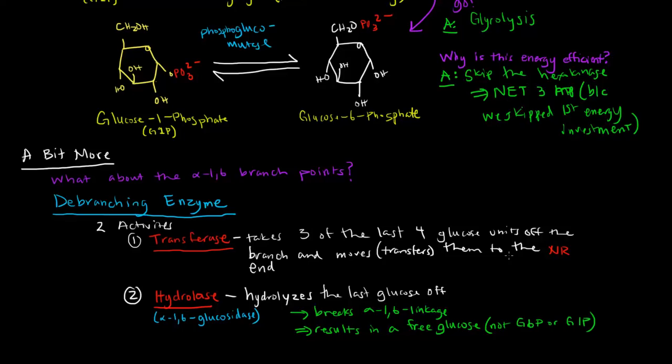When there's only one more glucose left on the chain connected via the alpha-1,6 linkage, we have this hydrolase enzyme that basically just hydrolyzes that last glucose off of the linkage. So it breaks the alpha-1,6 linkage and it results in a free glucose. And this glucose is not G6P or G1P, it's just a free glucose.